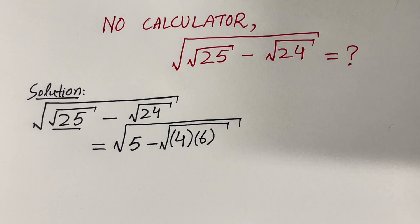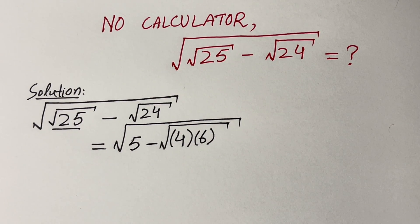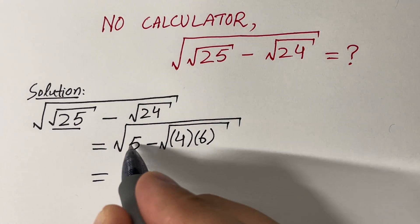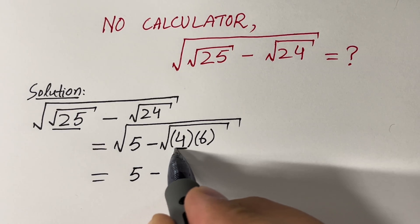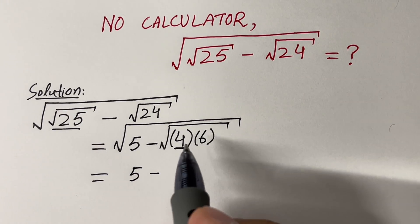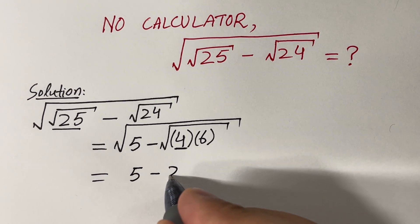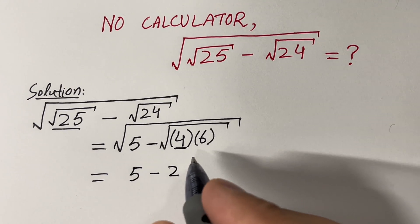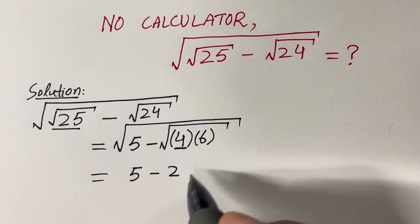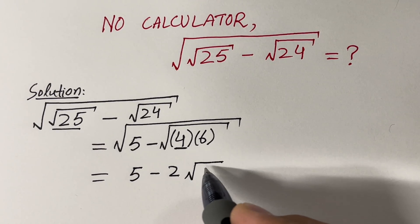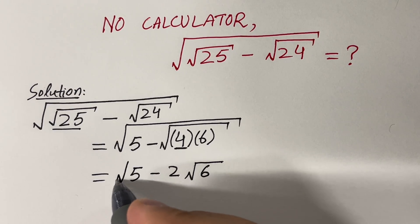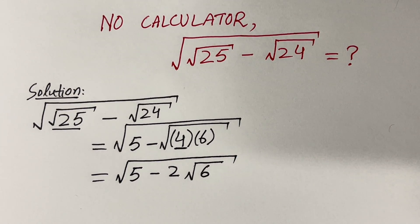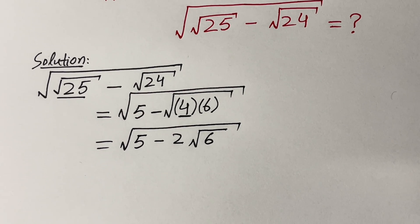So we keep 5 as it is. Then, since 4 is inside the square root and square root of 4 is 2, the 2 comes out of the square root, leaving square root of 6 inside. And on top of both of them we still have another square root.